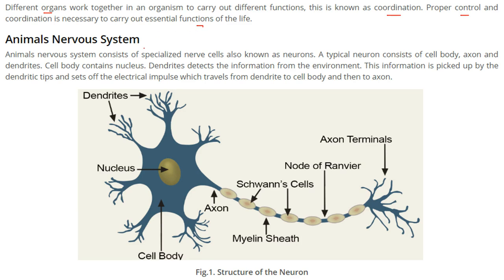Animals have a nervous system. This nervous system consists of very specialized cells which we call neurons. This is the structure of a neuron. A typical neuron consists of a cell body, an axon, and dendrites. These branches are the dendrites.